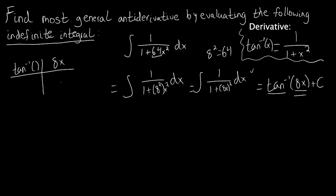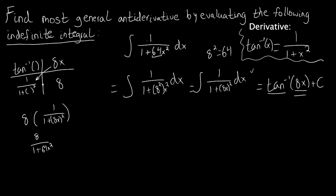The derivative of 8x is 8, and the derivative of tangent inverse gives us 1 over 1 plus the argument squared. So 8x goes in for the argument, and we multiply by 8. What we get is 8 times 1 over 1 plus (8x) squared, which simplifies to 8 over 1 plus 64x squared. This doesn't quite match the original integrand, which had 1 — not 8 — in the numerator.